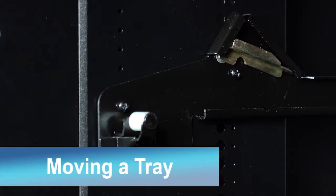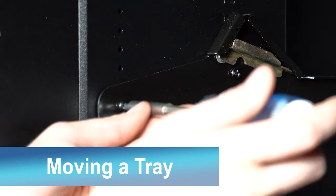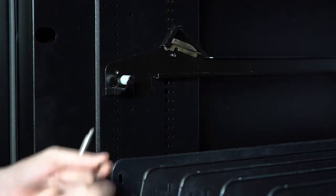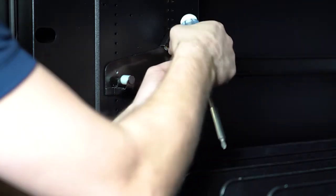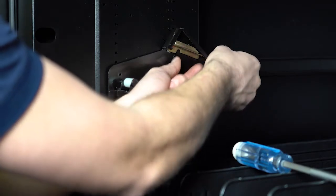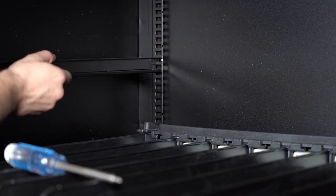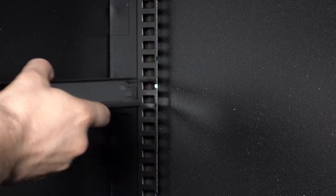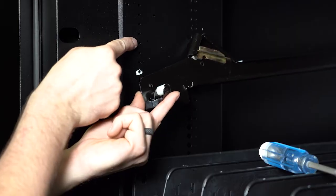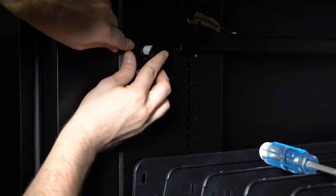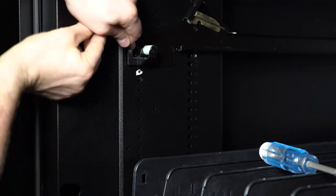To move your tray up or down, first remove the two screws here on the rail using a Phillips screwdriver or drill. Then unhook the rail from the back and move to the desired spot. Make sure the front and back are moved the same number of notches so the tray will remain level. Once the rail has been moved to the new location, you can tighten the screws back into place.